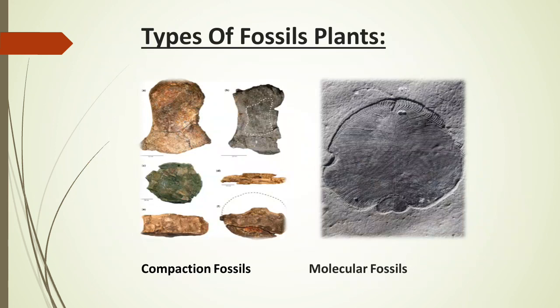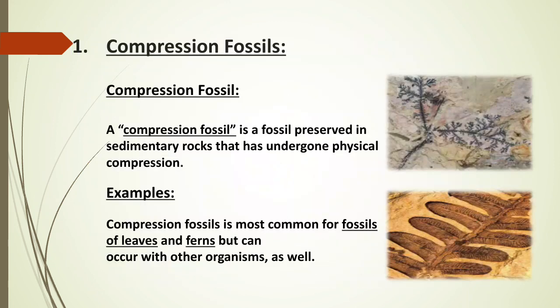Number one: compression fossils. A compression fossil is a fossil preserved in sedimentary rock that has undergone physical compression. Compression fossils are most common for fossils of leaves, but can occur with other organisms as well. You can see here in the diagram that the leaves are imprinted on the surface of the rock.